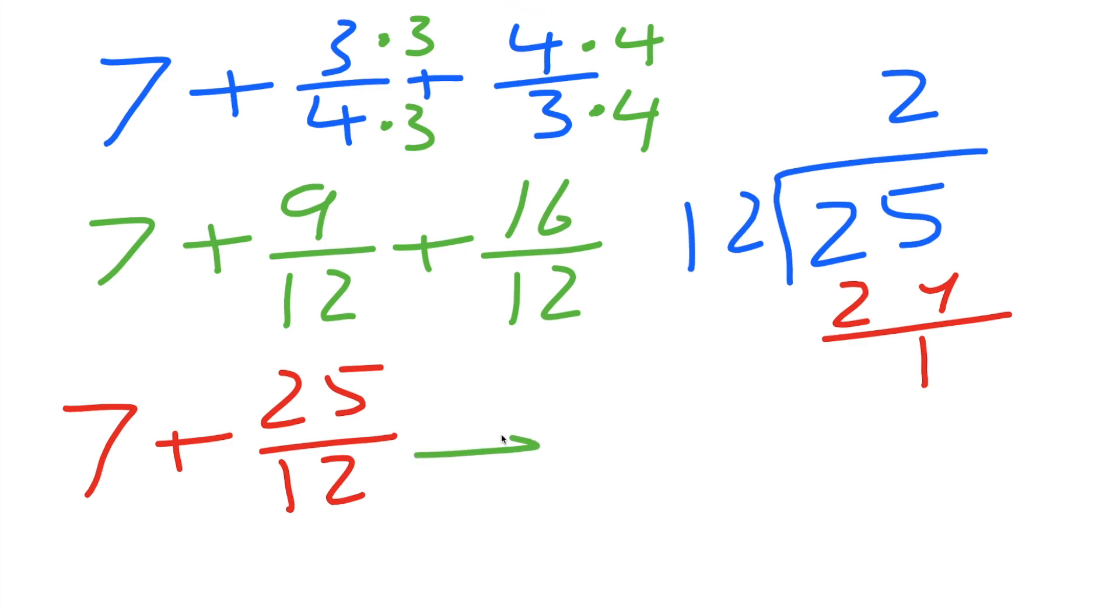So let's write this down. So we would get 7 plus 2, because 25 divided by 12 is 2 and some change. How much change is going to be? Well, 2 times 12 is 24. We have a 25, so 1/12 is the remainder.